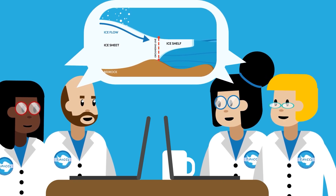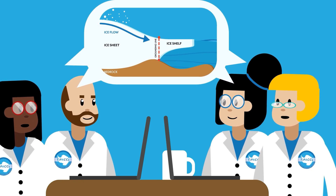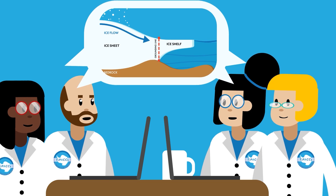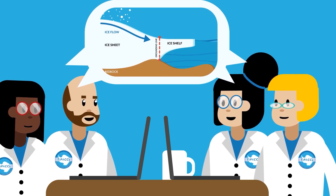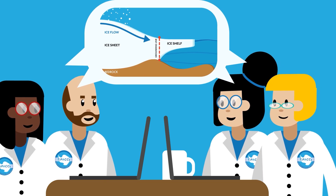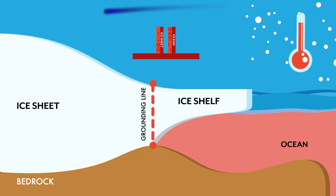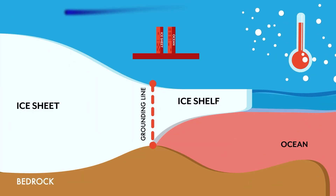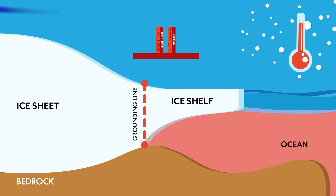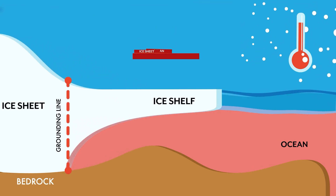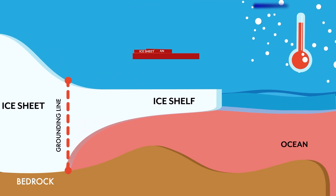Such models can represent interactions between the ice and the ocean and so-called tipping points that could lead to unstoppable ice sheet contribution to sea level rise. These models can be used to determine the climatic conditions under which the ocean could warm enough to tip the ice sheet into an unstoppable phase of retreat.